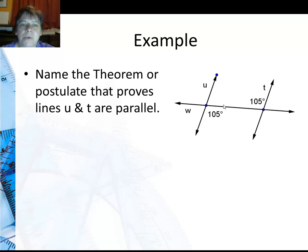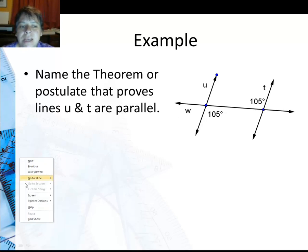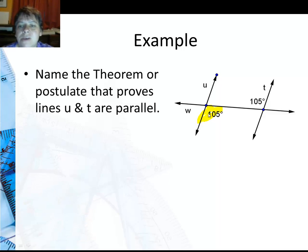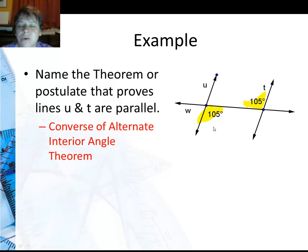In this example, I want to name the theorem or postulate that proves that lines U and T are parallel. You can see here that the two angles that we have that are 105 degrees are this angle right here and this angle right here. They are on opposite sides of the transversal, so they are an alternate pair. They are in between the two lines crossed by the transversal, so they are interior. My alternate interior angles are the same size—they are congruent—so the lines are parallel by the converse of the alternate interior angle theorem.